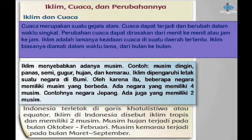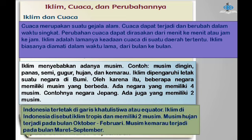Iklim dipengaruhi letak suatu negara di bumi. Oleh karena itu, beberapa negara memiliki musim yang berbeda. Ada negara yang memiliki 4 musim, contohnya negara Jepang. Ada juga yang memiliki 2 musim. Indonesia terletak di garis khatulistiwa atau ekuator. Iklim di Indonesia disebut iklim tropis dan memiliki 2 musim. Musim hujan terjadi pada bulan Oktober sampai Februari. Musim kemarau terjadi pada bulan Maret sampai September.